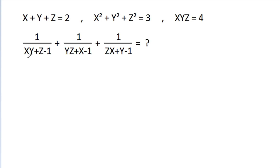Then we need to find: 1 by xy minus g minus 1, minus 1 by yg minus x minus 1, minus 1 by gx minus y minus 1, and show it is equal to 4.